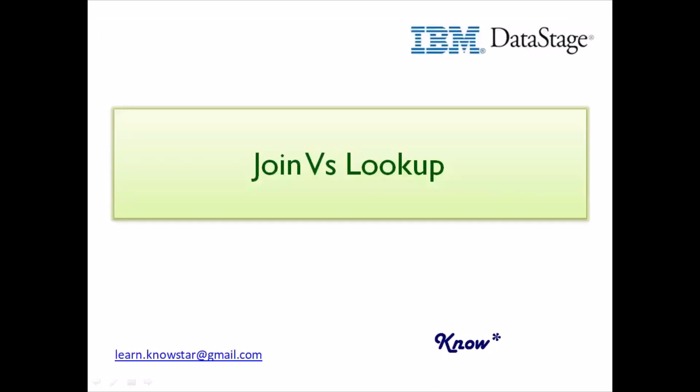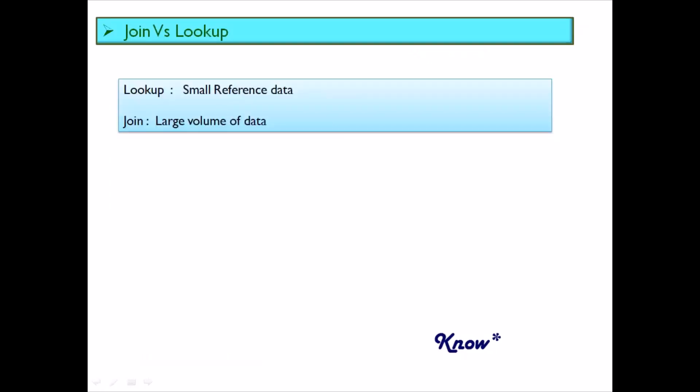The next question always asked is about the difference between the join and lookup stages. Join is used for large volumes of data — you need to sort the data before using the join stage, which makes it faster for huge volumes because the data is already sorted and partitioned. Lookup is used when your reference data is small enough to fit in RAM, which makes it very fast, and this is where you can use entire partitioning as well.